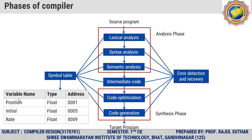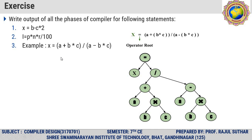Here is an example of a symbol table. The variable names are position, initial, and rate. Their data types: position covers float, initial covers float, and rate also covers float data type. And this column is the address. Based on our previous discussion, here you can try examples like x = b minus c times 2. Write all the phases of compiler for the following statements: i = p * r / 100, and x = (a + b * c) / (a - b * c).